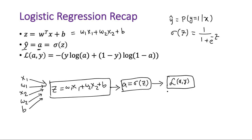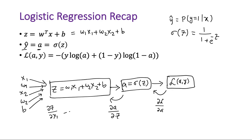With this computation graph we can compute the value of the loss. The next job is to use this graph for backward computation — that is, computing gradients of different quantities with respect to each other. The ultimate goal is to calculate the gradient of the loss function with respect to different input variables. We will calculate del L over del a, then del a over del z, and then del z over del w1, w2, and b. We update w1, w2, and b each iteration but not x1 or x2.